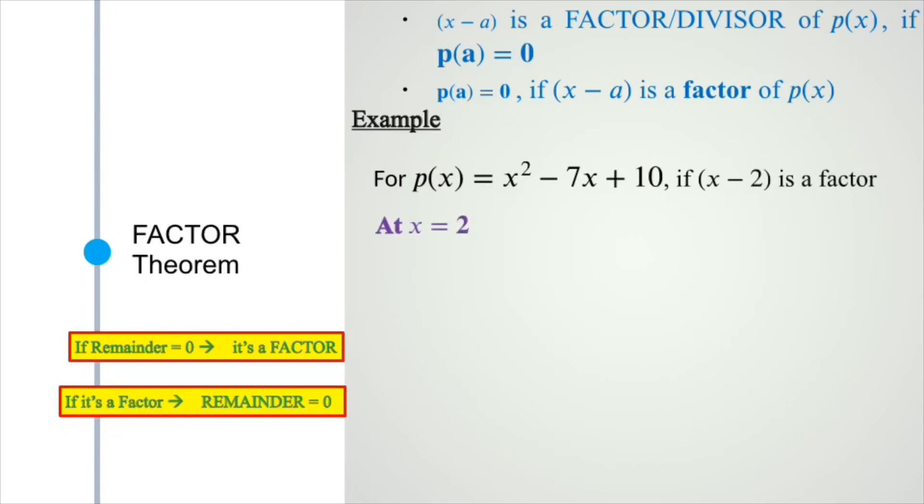Conversely, if a factor is given like x minus 2, then at x equals 2 the remainder has to be zero.